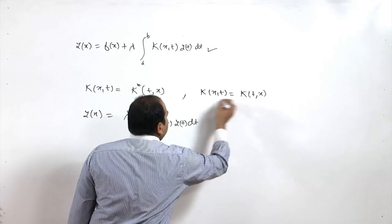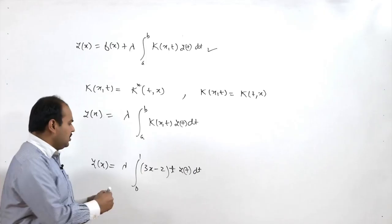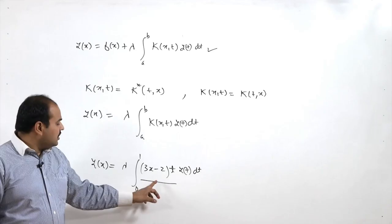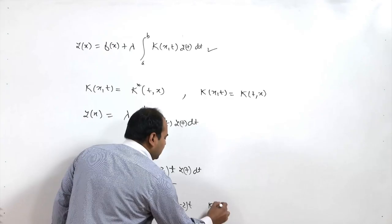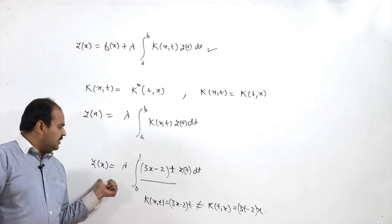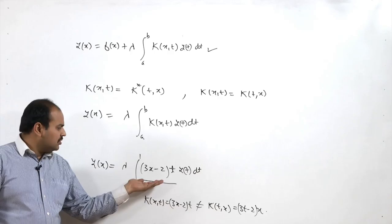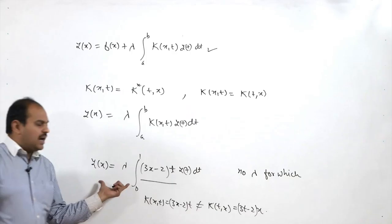For a real kernel, k(x,t) = k(t,x) is the symmetricity condition. So for a real kernel, k(x,t) = k(t,x) implies the kernel is symmetric. Here k(x,t) = (3x − 2t), so k(t,x) = (3t − 2x), and clearly they are not equal. This kernel is not symmetric, and we have already proved that this problem has no eigenvalues — no λ for which this equation has a solution.